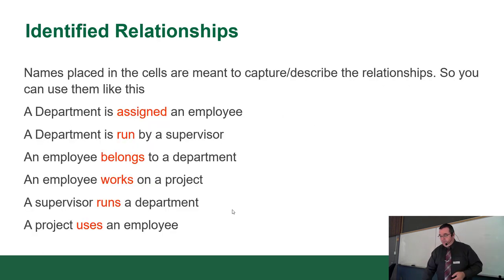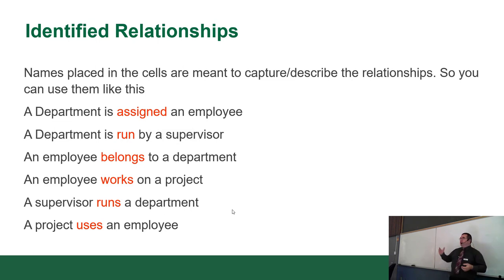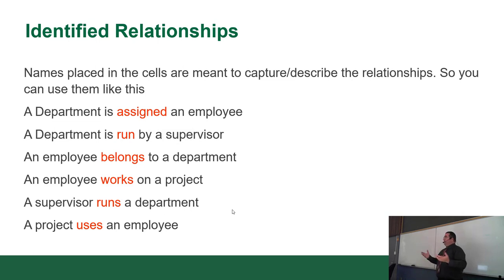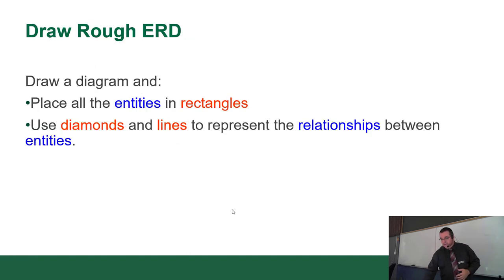You can write out the relationships as sentences to present to the customer: a department is assigned an employee; a department is run by a supervisor; an employee belongs to a department; an employee works on a project; a supervisor runs a department; and a project uses an employee. At this point, we've identified all the objects — entities — and how they're connected — relationships.